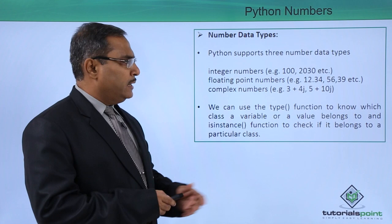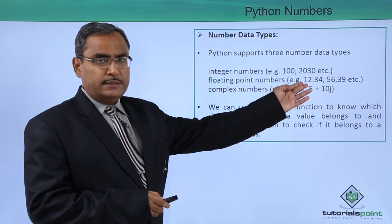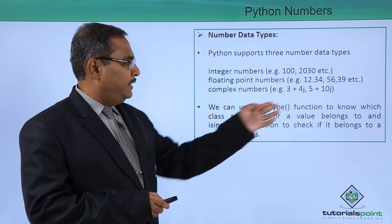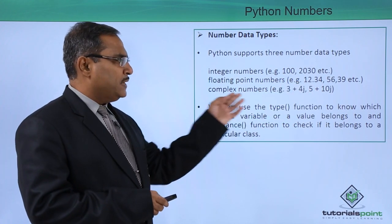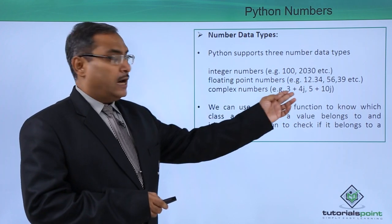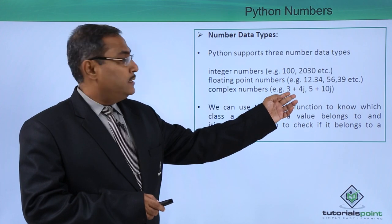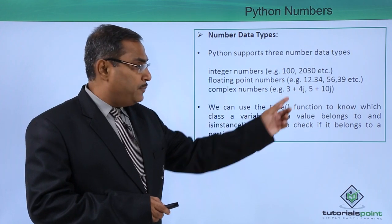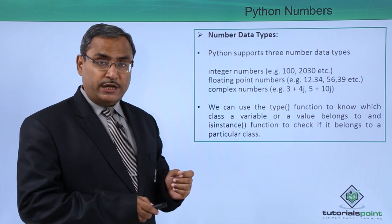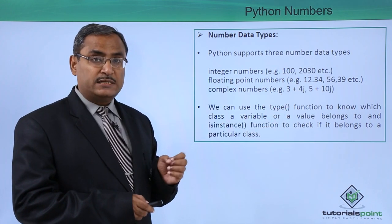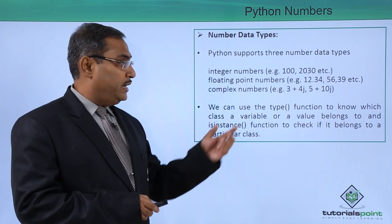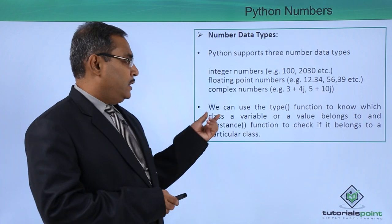Floating point numbers are the next type. Complex numbers are to be written in a particular format, like 3 plus 4j or 5 plus 10j in this way.